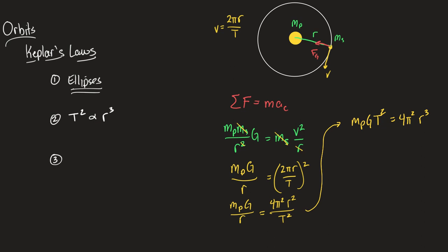Some planets had very long periods — something that couldn't be observed in a human lifetime — but he was still able to predict those periods because he could measure how far away they were from the sun. So: Kepler's first law is ellipses, Kepler's second law is this period-radius ratio we talked about yesterday, and Kepler's third law — which concerns angular momentum — we're going to talk about today.